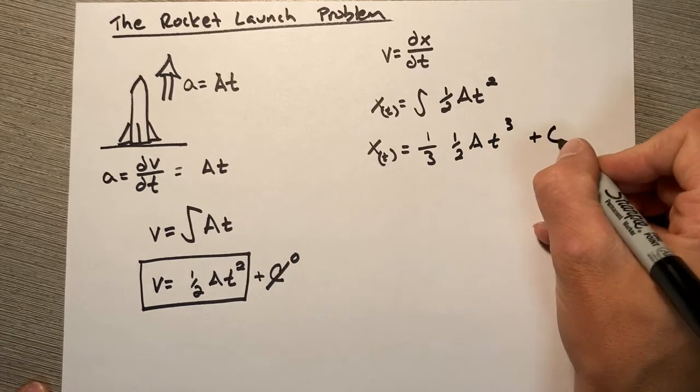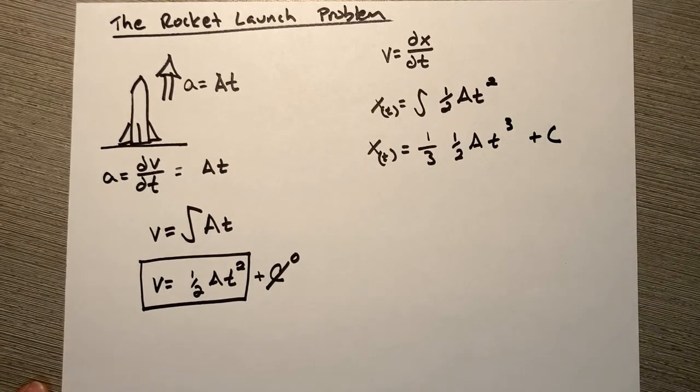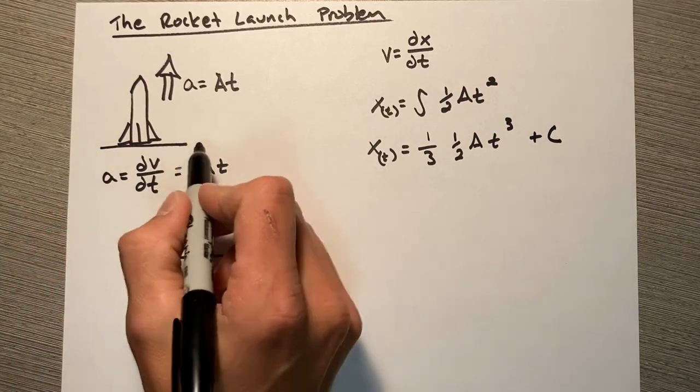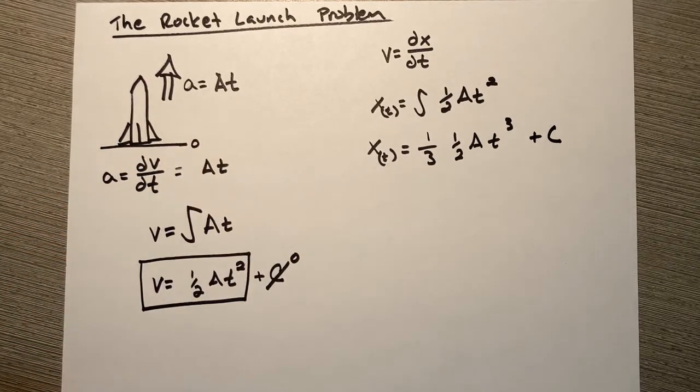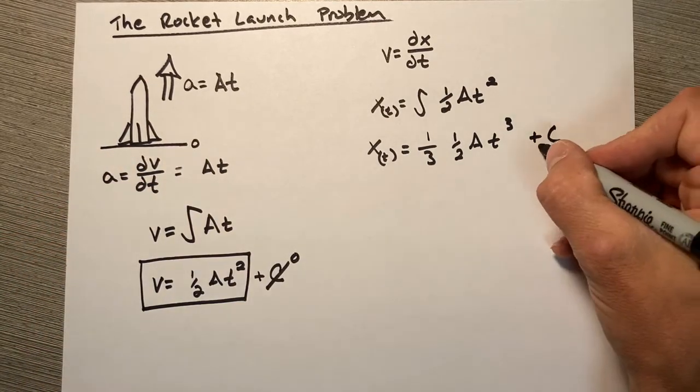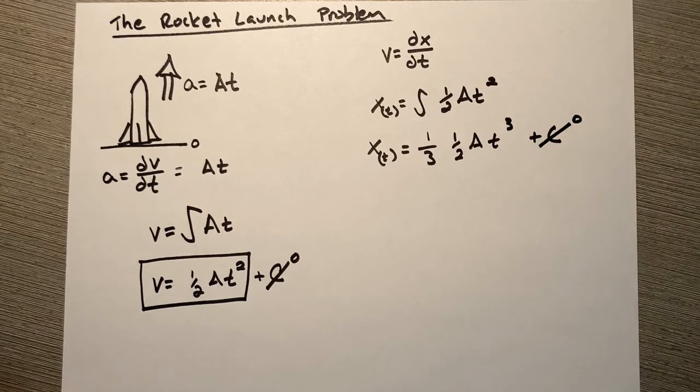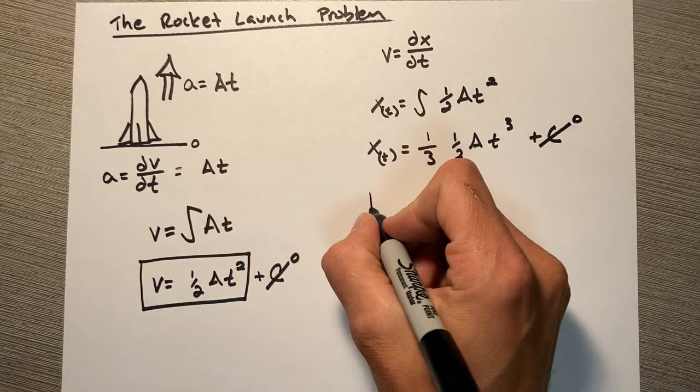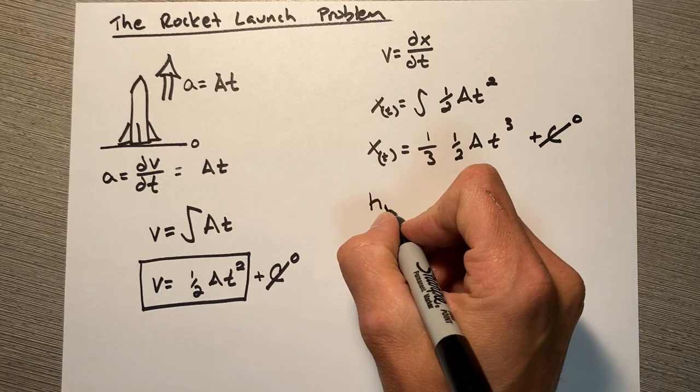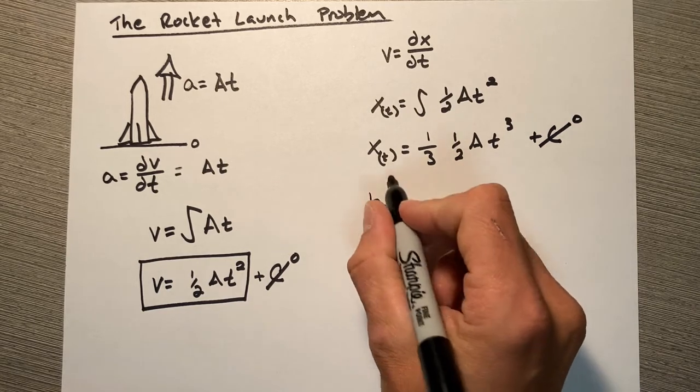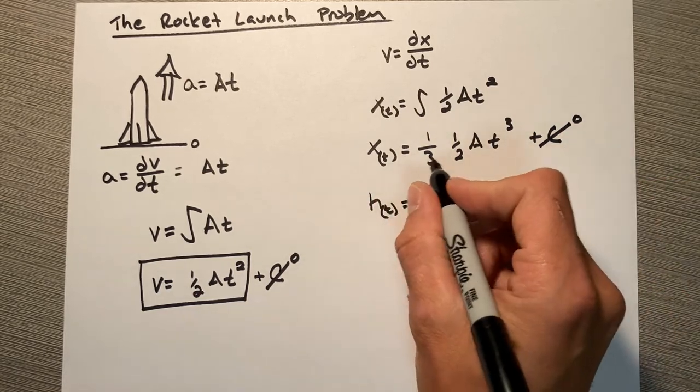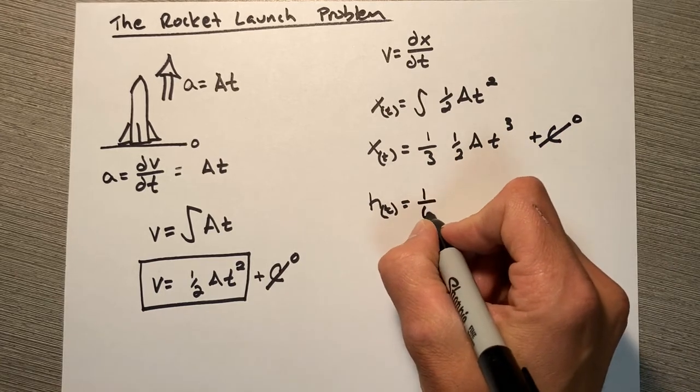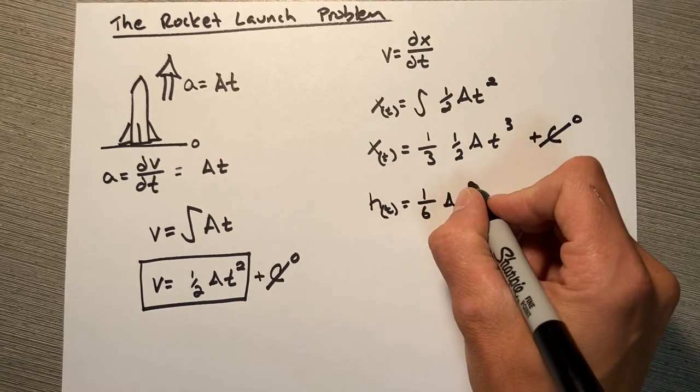Now again, we're trying to get to the height of this rocket. If the rocket starts on the ground, the height is zero, so our initial term here again is going to be zero. So our height as a function of time is simply going to be this term—we'll combine these two fractions—one-sixth A t cubed.